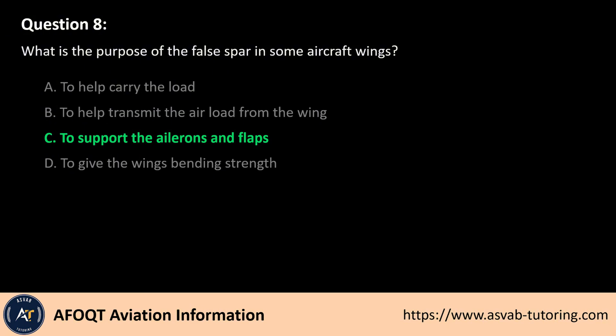The answer is C. The false spar in some aircraft wings primarily serves to support the ailerons and flaps. Unlike the main spars, which carry the primary structural loads, the false spar provides attachment points for these control surfaces. This design allows for independent movement of the ailerons and flaps while maintaining the wing's overall structural integrity and functionality.